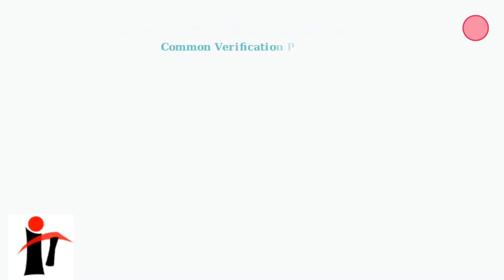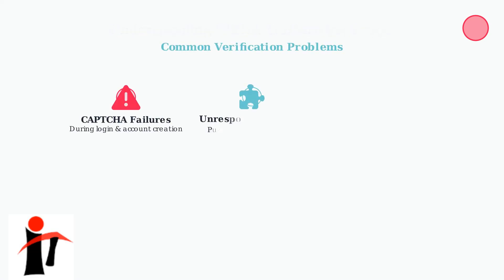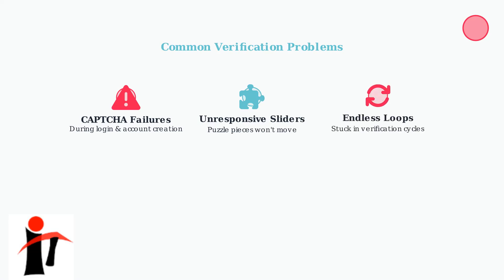Many users face three main types of verification problems. First, CAPTCHA failures during login and account creation. Second, unresponsive puzzle sliders that won't move or load correctly. And third, endless verification loops where users get stuck repeating the same process.